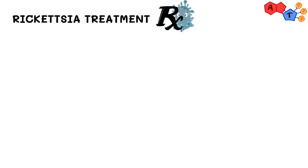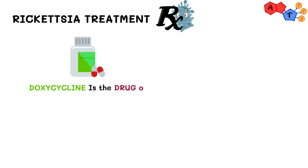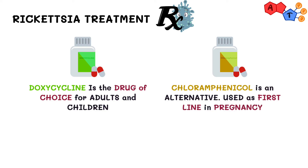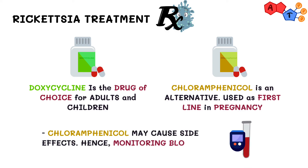Doxycycline is the antibiotic of choice for adults and children. Chloramphenicol may be used as an alternative to doxycycline, and is used instead of doxycycline as first-line in pregnancy. However, this drug may cause side effects, and monitoring of blood and disease may be needed.